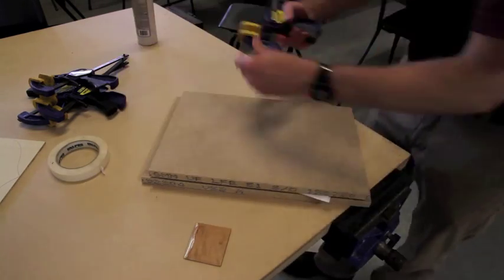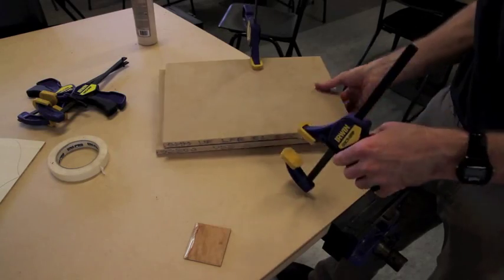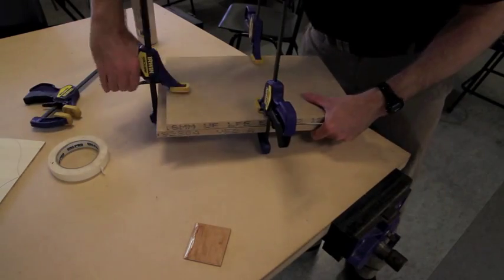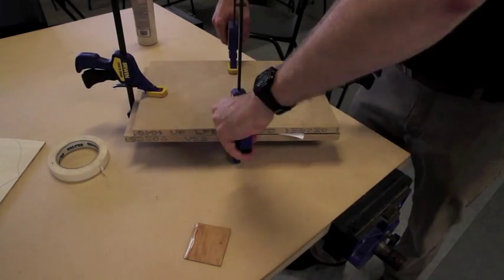Once you're happy, make sure there's a bit of paper on either side of it and clamp it between the two bits of MDF. You'll need to leave that dry for a couple of hours.